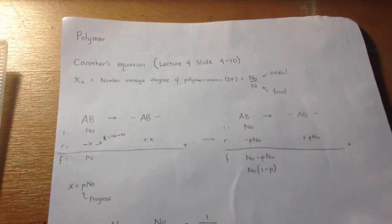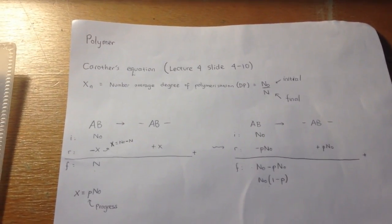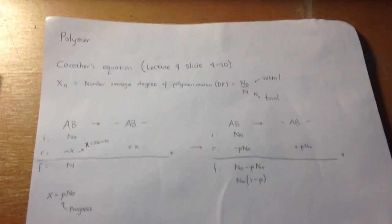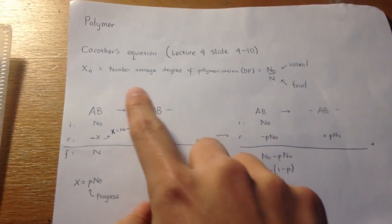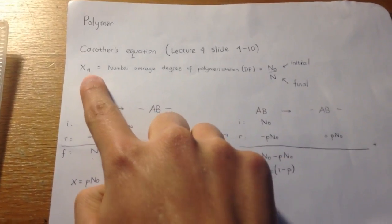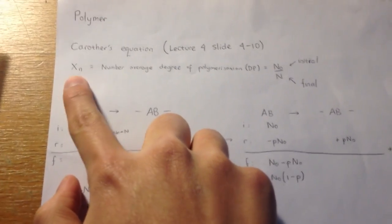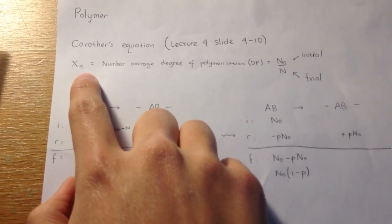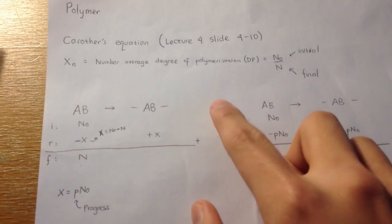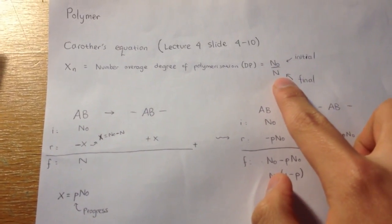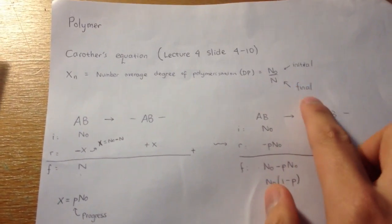Now I'm going to talk about several topics in polymer. First topic is about Carothers' equation. In the lecture slides, they express the Xn number average degree of polymerization as n0 over n, or initial over final.